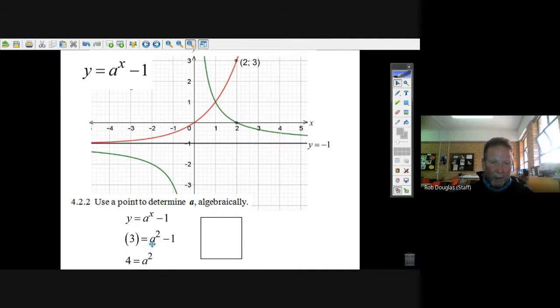Well, you have, instead of x, it's a two. So it's a squared. And y is really three. You add one to both sides. Three plus one is four. Now we've got a squared is equal to four.